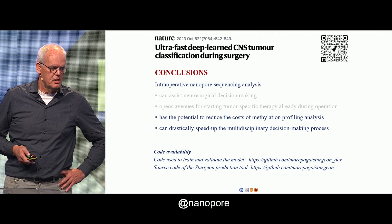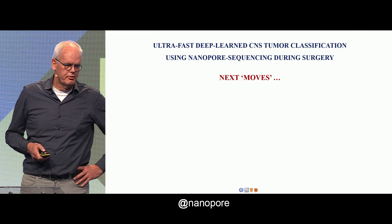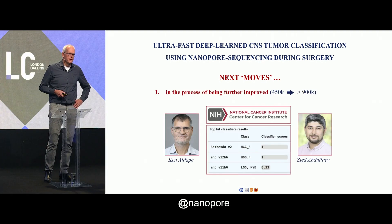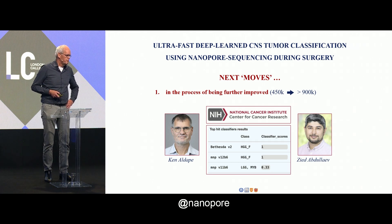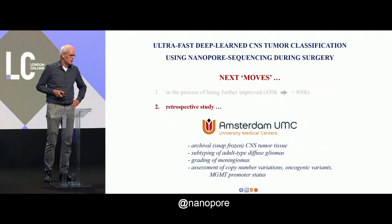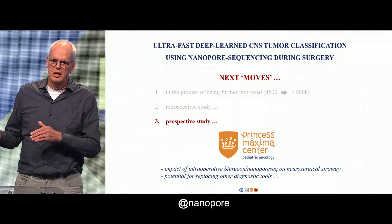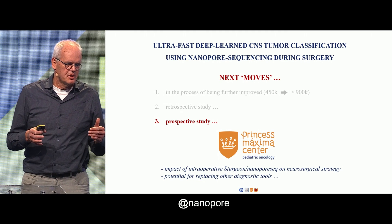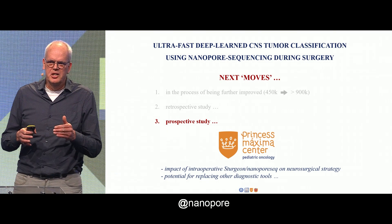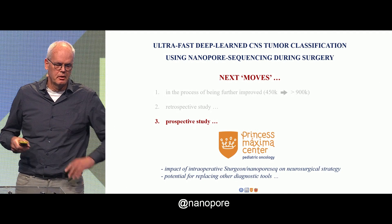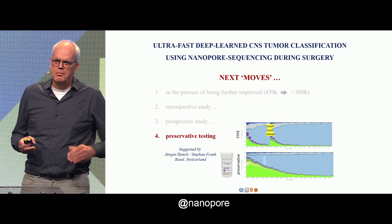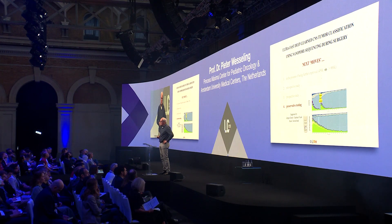Codes are available via the sites mentioned here. We have plans for the near and more distant future. For instance, the classifier is further improved by collaboration with Kendall Dap and Ziad Abudolayev from Bethesda NIH. We are performing a retrospective study in the Amsterdam University Medical Centers, figuring out the strengths and weaknesses of the nanopore approach. We are performing a prospective study in the Princess Maxima Center in Utrecht, trying to identify the exact benefit of intraoperative analysis for changing neurosurgical strategy and replacing other diagnostic tools. We are also in the process of preservative testing, because one of the downsides of nanopore sequencing is that it can be applied to fresh and snap-frozen tissue, but using FFPE — formalin-fixed paraffin-embedded material — is very, very challenging.